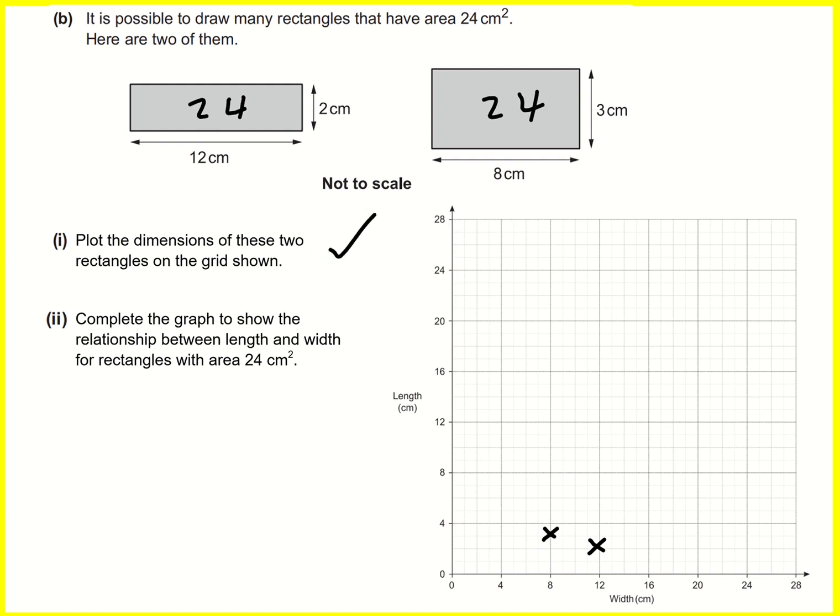Complete the graph to show the relationship between length and width for rectangles of area 24 centimeters squared. So that essentially means find other rectangles of area 24 centimeters squared. Well, I've got two for free. I could swap these around and have a width of two with a length of 12, and that's going to be up here. And I could do the same over here. I can have a width of three and a length of eight.